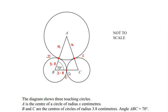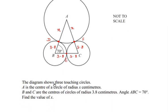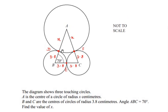So the radius is 3.8 over here and here the radius is 3.8. Angle ABC is given as 70 degrees. We have to find out the value of x. Now to find out the value of x, let us consider only the triangle ABC.